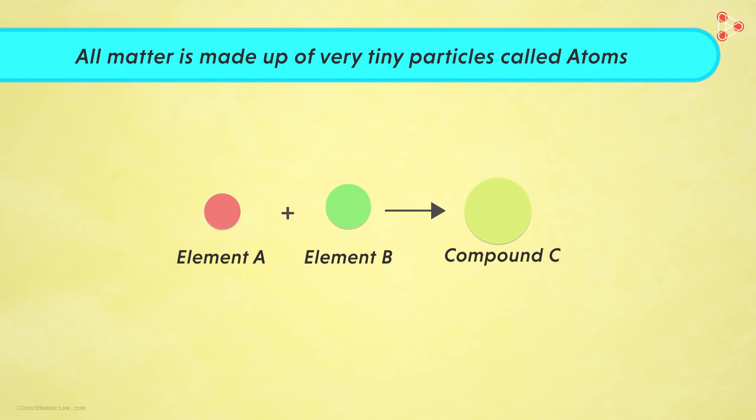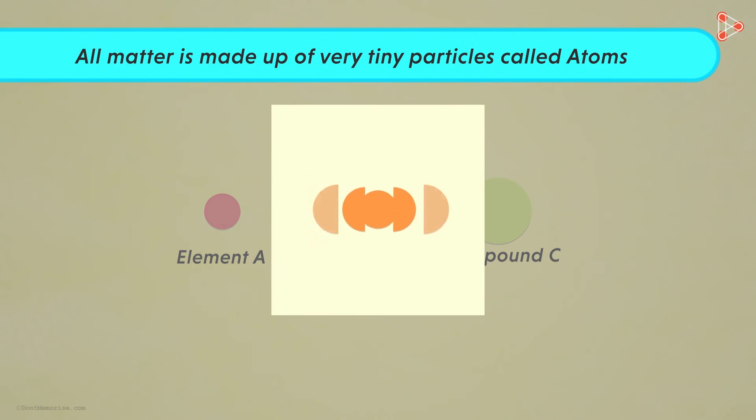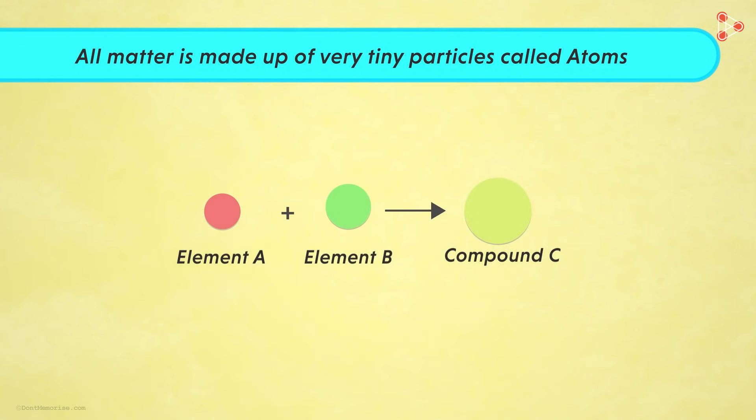The first point stated that all matter is made up of very tiny particles called atoms. It means that when we go on dividing matter into smaller and smaller sections, what we get at the end is atoms. So can we say that elements A and B are made up of atoms? Yes! In fact, compound C is also made up of atoms that have combined together. So the first postulate was very easy to understand.